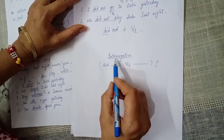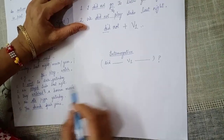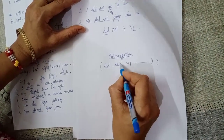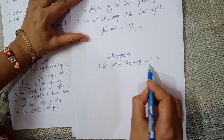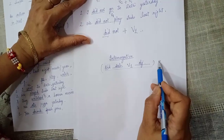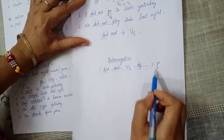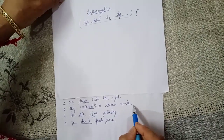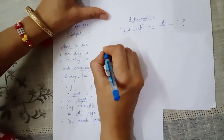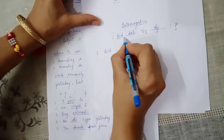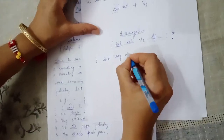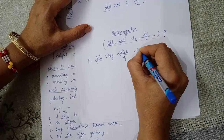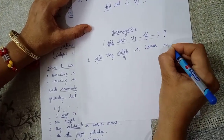Now let us see how to form interrogative sentences using this tense. The rule is: we start the sentence with did, then comes the subject, then the first form of the verb, and then the object. Do not forget to put a question mark at the end. For example, taking the sentence: They watched a horror movie — we convert it to: Did they watch a horror movie? Watch is the first form of the verb used here.